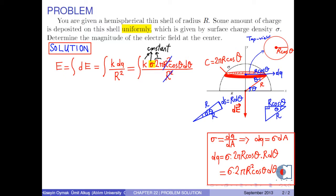Also, k and 2 pi are constant. Therefore, they can be taken outside the integral sign. So, we obtain 2 pi times k times sigma times integral cosine theta d theta.